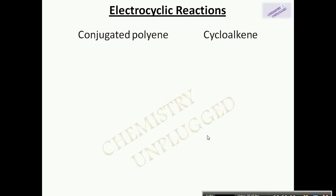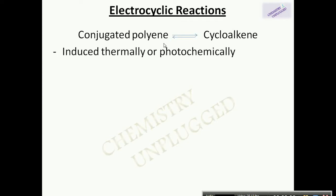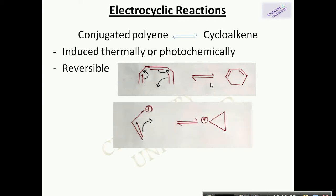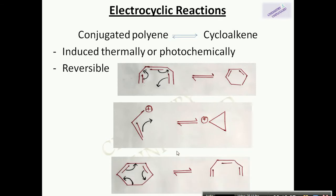Now we have basic knowledge about symmetries and molecular orbitals. Let's move to pericyclic reactions. First is the electrocyclic reaction. Electrocyclic reactions are the conversion of conjugated polyenes into cycloalkenes, or cycloalkenes into conjugated polyenes. These reactions are induced by heat or UV light and are reversible in nature. Examples include conversion of 1,3,5-hexatriene into cyclohexene, conversion of allyl ketone into cyclopropyl ketone, and ring opening of cyclohexene into 1,3,5-hexatriene.